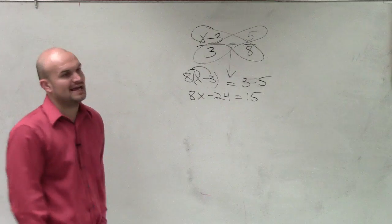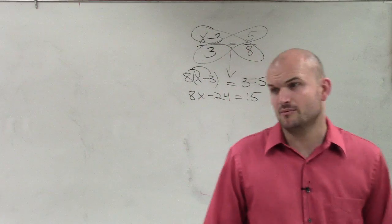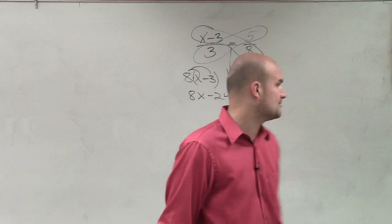So now I have 8x minus 24 equals 15. Does everybody agree with me on what I did? I just distributed the 3.